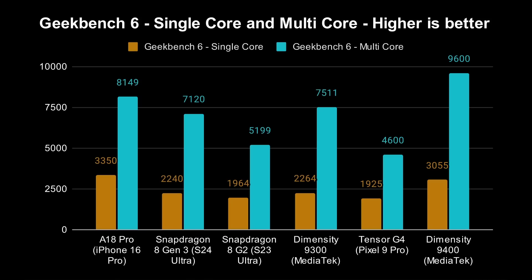Here are MediaTek's results — not independently verified, not from devices we have in hand. They're claiming 35% better for single core and 28% better for multi-core. If I plot that on some of my graphs, the single-core score of 3055 is much faster than the 2264 for the previous generation, and clearly better than the Snapdragon 8 Gen 3 and 8 Gen 2. Of course the Snapdragon 8 Gen 4 is coming soon, but the Apple A18 Pro is still faster in single-threaded performance.